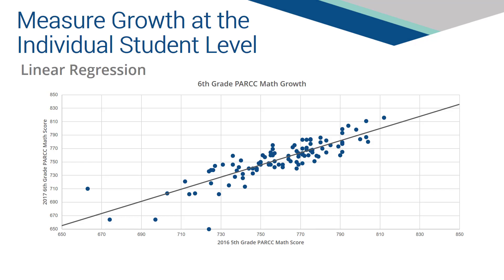The linear regression equation is used to set the projection. In this example, for each grade 5 PARCC score, a unique projection for grade 6 is produced. The gray line, or linear regression, provides a mechanism to project a student's PARCC score for the current year based on his or her PARCC score the previous year.